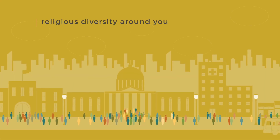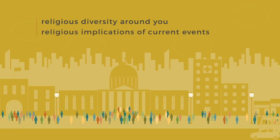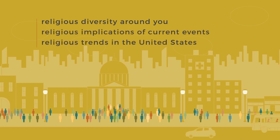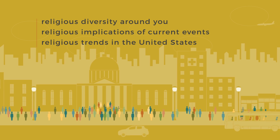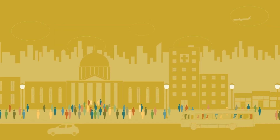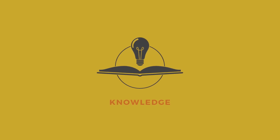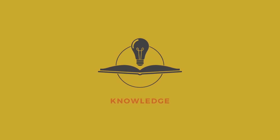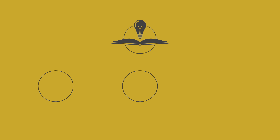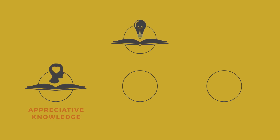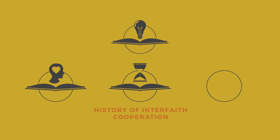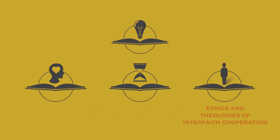As you become increasingly aware of the religious diversity around you, the religious implications of current events, and some of the religious trends in the United States, you will also start to find ways to utilize that awareness to your advantage as a leader. Developing an interfaith-specific knowledge base will help you do that successfully. You will build three categories of knowledge throughout the remainder of this course. First, you will begin to develop an appreciative knowledge of other religious traditions. Second, you will learn about the vibrant history of interfaith cooperation in the United States. And third, you will begin to develop your own ethic or theology of interfaith cooperation and hear the ethics and theologies of others. We will take each of these in turn, starting with appreciative knowledge.